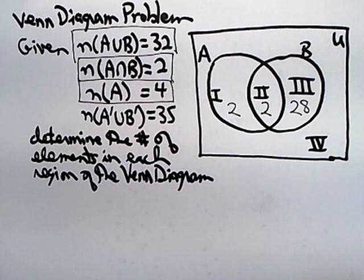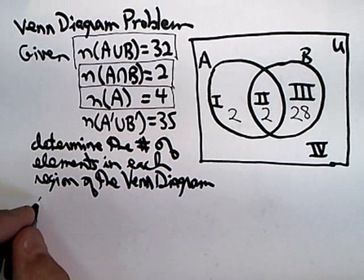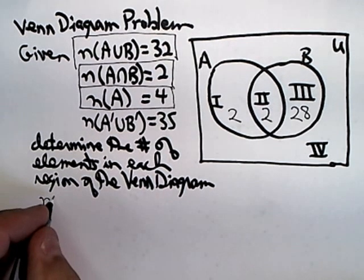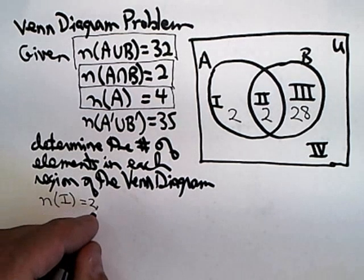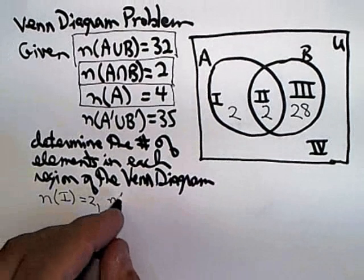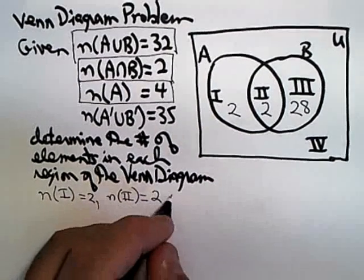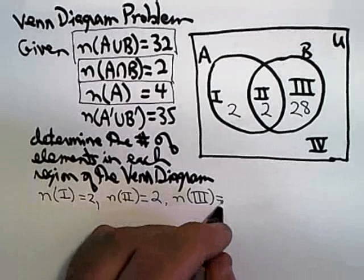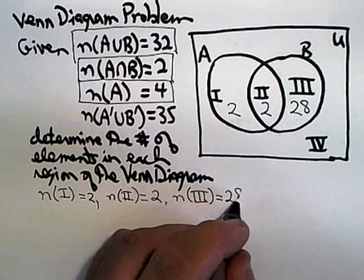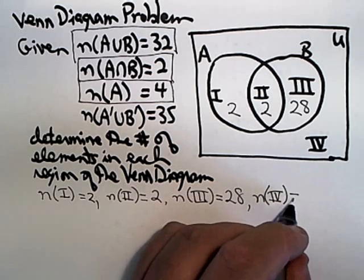Now, the only piece of information we have not used, and before I continue, I'm going to go ahead and put down the answers we have. The number of elements in region 1 is 2. The number of elements in region 2 is 2. The number of elements in region 3 is 28, and we're now looking for the number of elements in region 4.